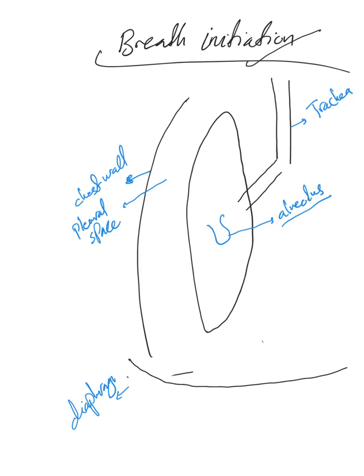When we initiate our breath, the intercostal muscles also cause the chest wall to move anteriorly and upward. Both of these movements — the diaphragm moving downward and the chest wall moving upward and anteriorly — lead to an increase in the chest cavity size.